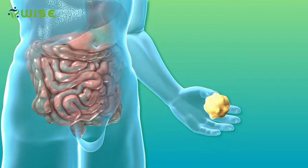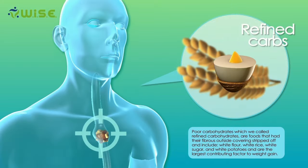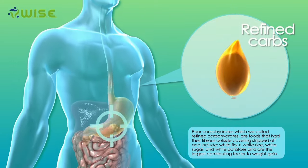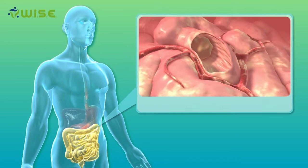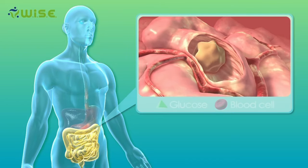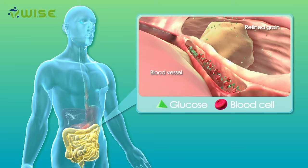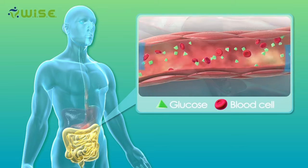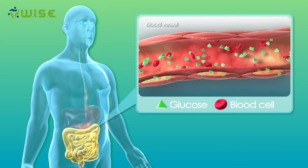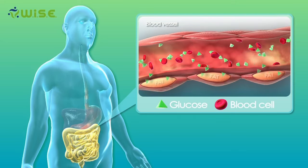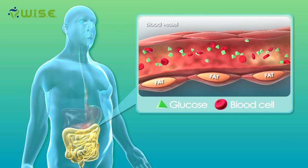When you eat a refined grain, it goes down into the mouth, into the stomach, then into the upper intestines. This time, because the grain has no fiber, it is quickly broken down in the intestines and absorbed, dumping a large amount of glucose into the bloodstream. The glucose moves into the cells, but there is more glucose than the cell can use, so the body converts it into fat, which accumulates on the body.